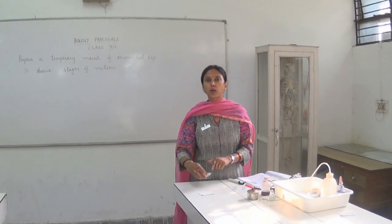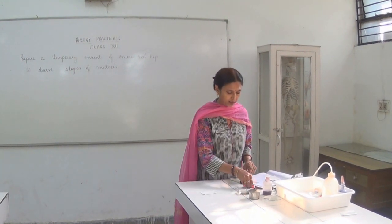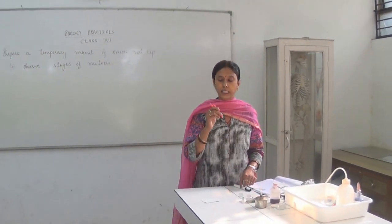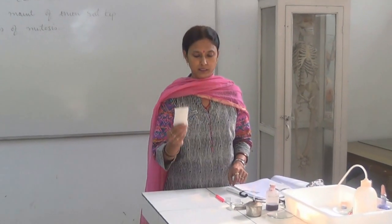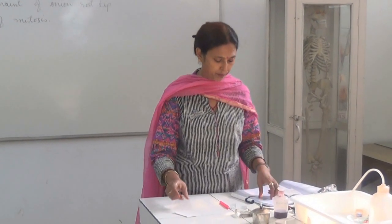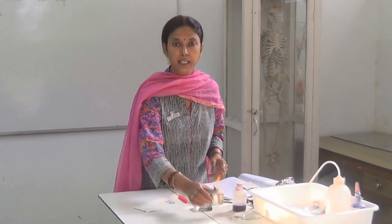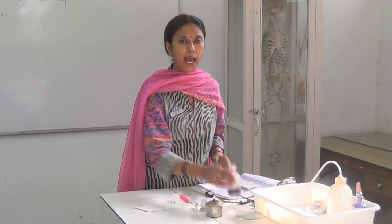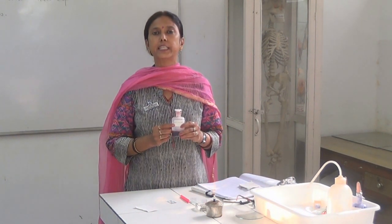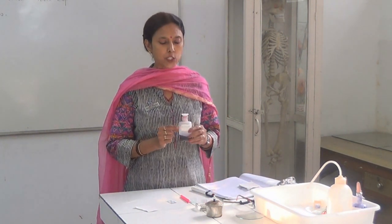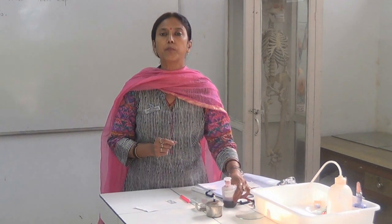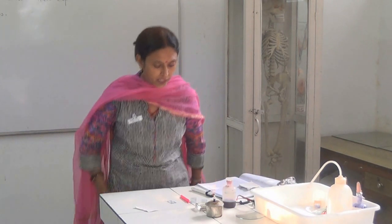We are going to use the onion root tips for this procedure. The requirements are: slides, root tips of onion, a needle, blotting paper, a blade, a spirit lamp, and a special staining agent called acetocarmine. Acetocarmine is used here because DNA takes a very good stain with it.